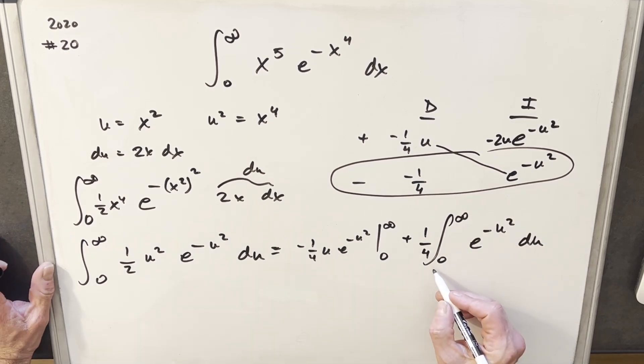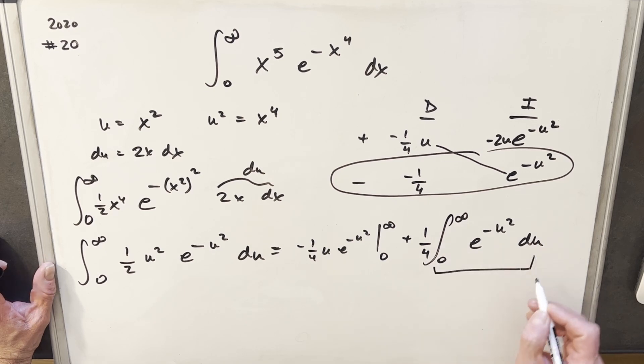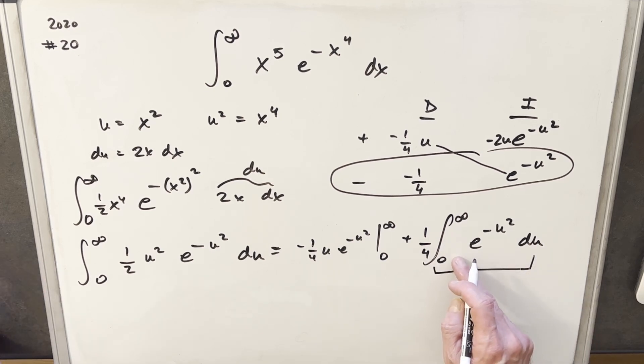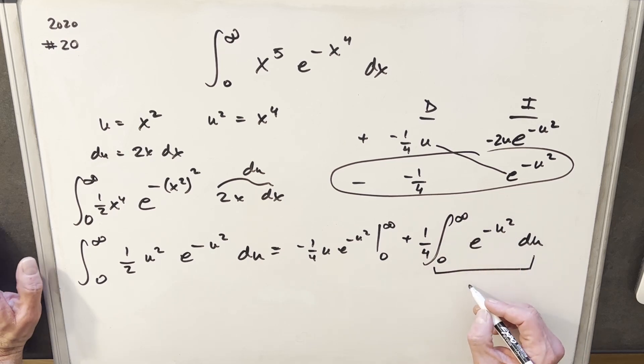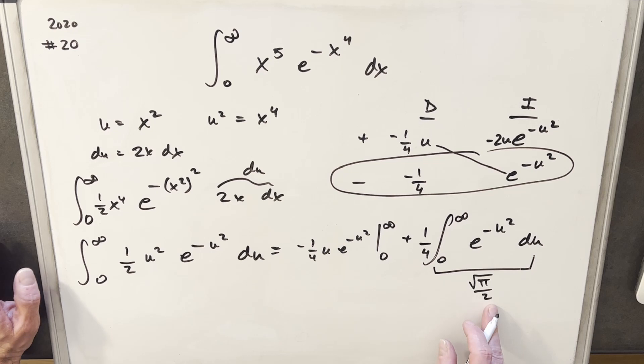And then the beauty of this is this was the formula we had on the board earlier. This is actually the Gaussian integral. Okay from 0 to infinity. So this value we found earlier was square root of pi over 2. So we have part of our solution right here.